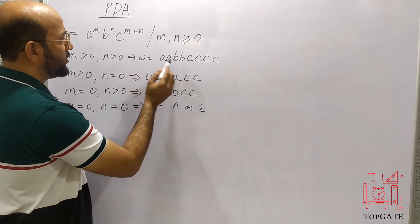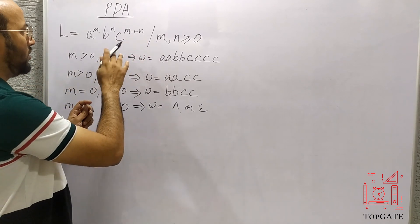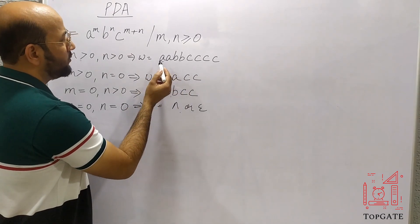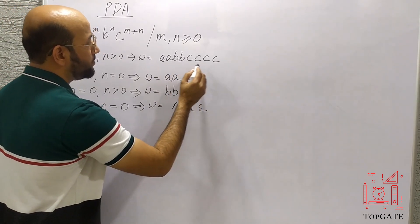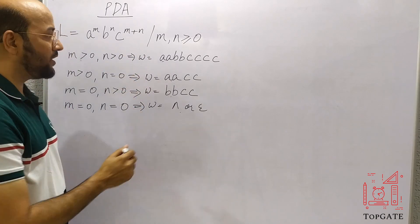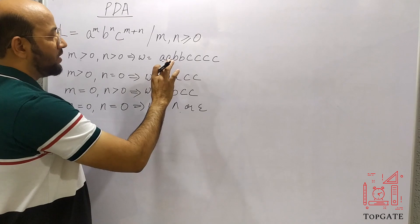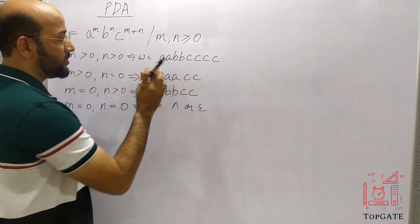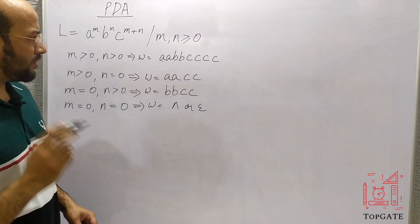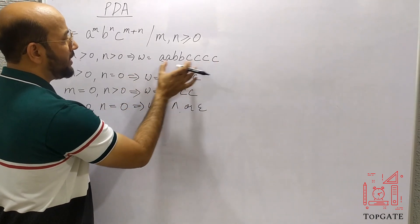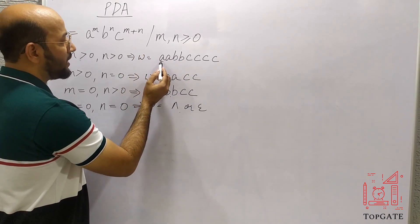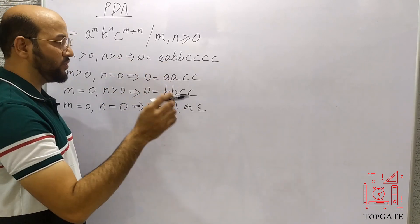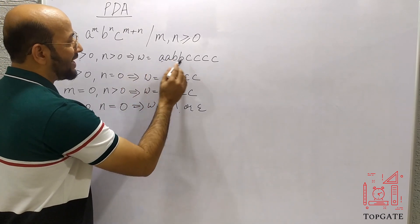Analyzing the first case where m and n are both greater than zero: we need to make sure that the number of c's equals the addition of the number of a's and b's. So if we have two a's and two b's — that is four — we get four c's. The logic is: when a comes, we push it into the stack; when b comes, we push it; and for every c, we pop an element out.